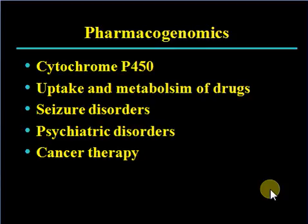Pharmacogenomics involves cytochrome P450 enzymes and the uptake and metabolism of drugs. Changes in these genes can be relevant to various disorders, including psychiatric disorders.